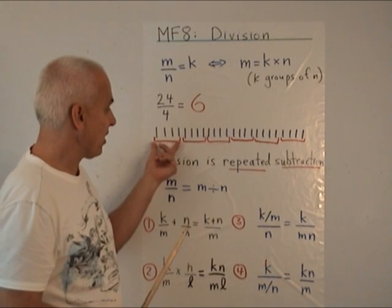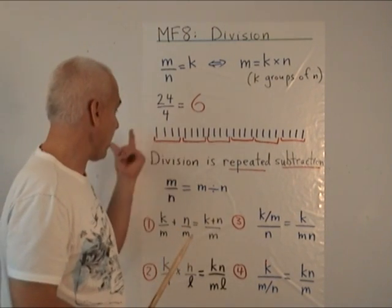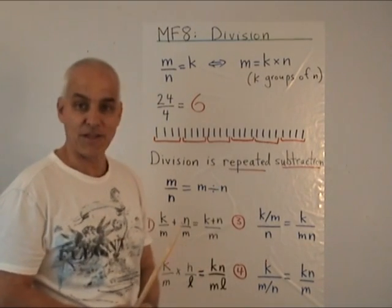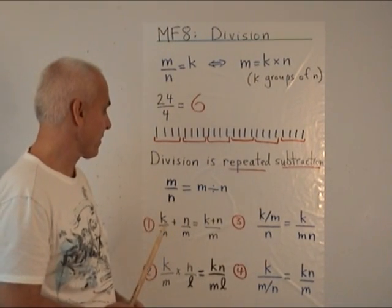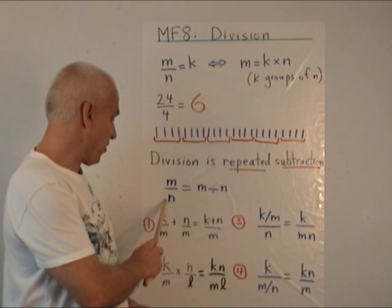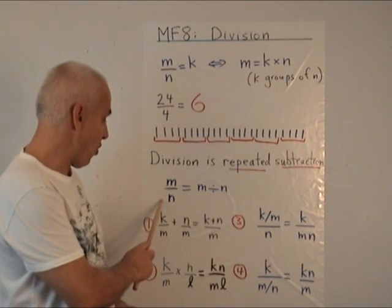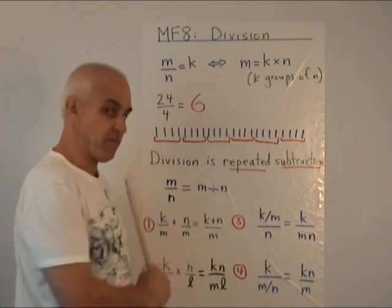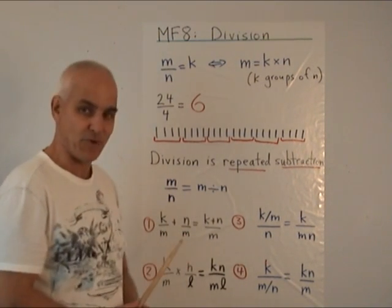This shows that division is repeated subtraction. We subtract 4, then we subtract another 4, we subtract another 4 until we've exhausted the original number. That also explains why another notation for division. Instead of m over n, sometimes we write m divided by n. This is another sign for division. It resembles subtraction.